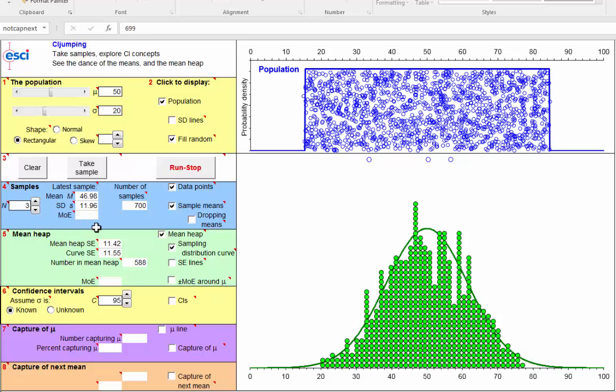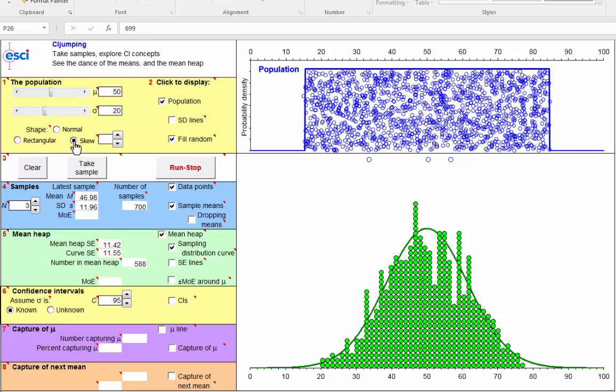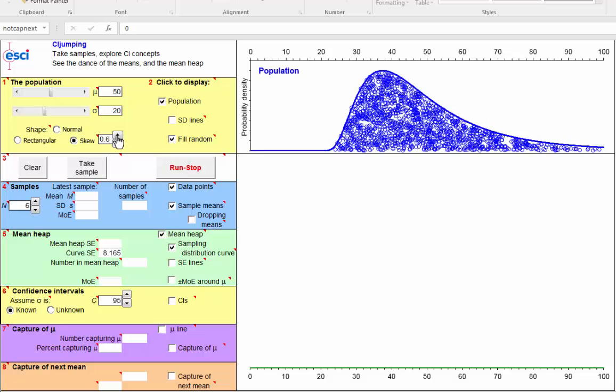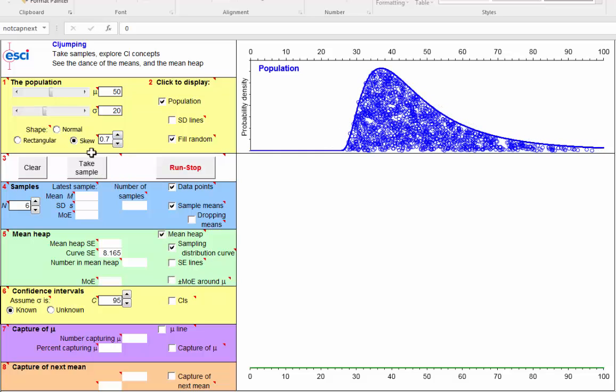Okay, let's try a distribution, a population distribution with a different shape, a skewed distribution. And I'm going to take samples of size 6, and I'm going to make it really skewed, setting the skew parameter to 0.7, samples of size 6. And I'm going to drop down the sample mean.